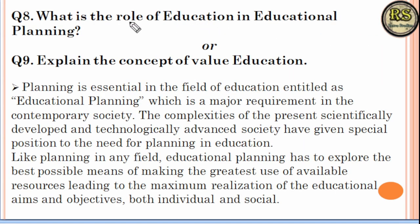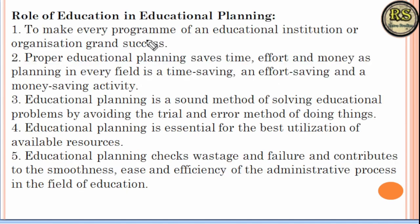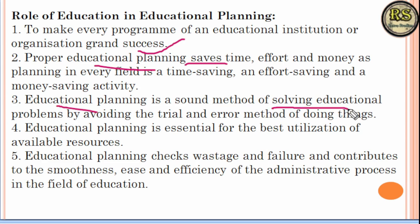Question number 8 states that educational planning is the most important requirement in society. Good planning ensures the resources available are used effectively. Key points include: making every educational program a grand success, saving time, effort, and money, solving problems when they arise, managing failures better, and ensuring administration moves forward effectively.